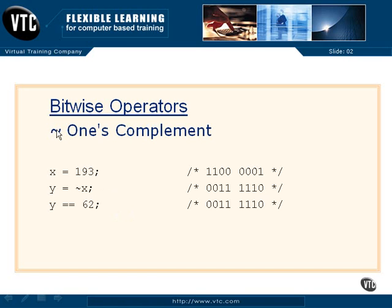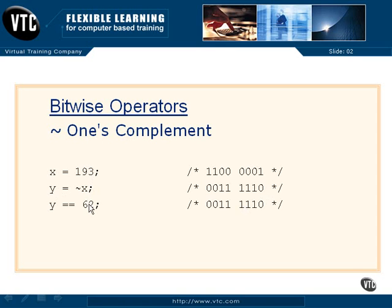The tilde — this little squiggly character — is called the ones complement, and it flips all the bits. Whatever value the bits are when you start, they are reversed when finished. This is a unary operator because it only has one operand. Y is equal to the ones complement of X. X is 193 — there's the bit pattern. The ones complement of X flips every bit: 1,1,0,0 becomes 0,0,1,1 and 0,0,0,1 becomes 1,1,1,0 — giving us Y equal to 62. The ones complement of 193 is 62.